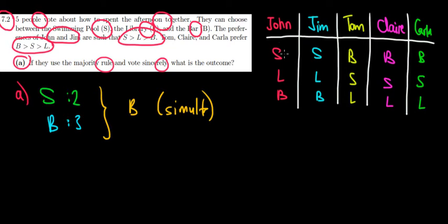So what would be the first set? Let's say S and L, swimming pool versus library. Let's see what the results would be. Who would vote swimming pool? John and Jim, S over L. Tom, S over L. Claire, S over L. Carla, S over L. So we would have five votes for S, five votes versus zero, meaning that S would win. So swimming pool advances. Now let's see the second set.